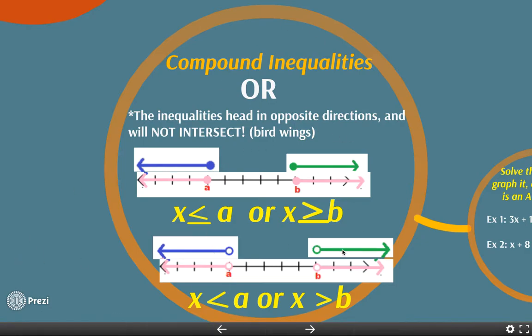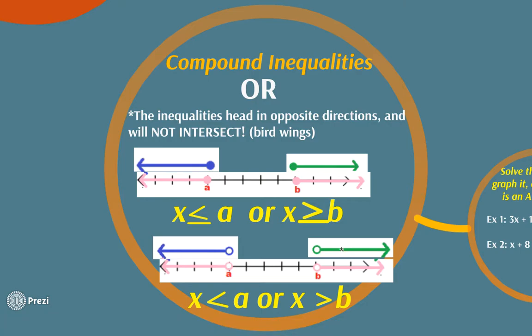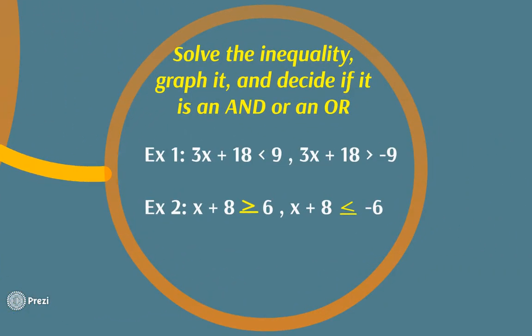Be on the lookout for both cases: the OR case where the arrows don't intersect, and the AND case where they do collide. Go ahead and pause this video — we'll work on example one and example two to determine if these are AND or OR inequalities.